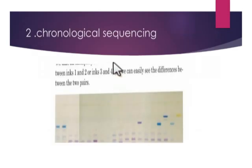Chronological sequencing explains the time difference between the use of two inks. For example, if an agreement was made five years ago and alterations or manipulations were made two or five years later, then through chronological sequencing we can examine the differences in time period. Through all these methods, we can conclude that Raman spectroscopy is a good and accurate method for the analysis of questioned documents. Thank you.